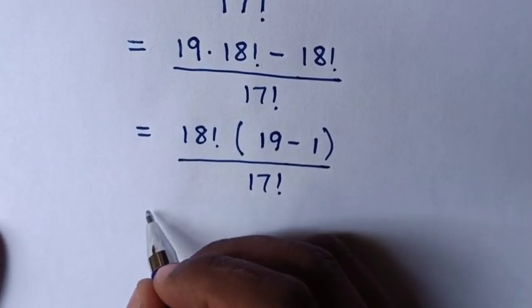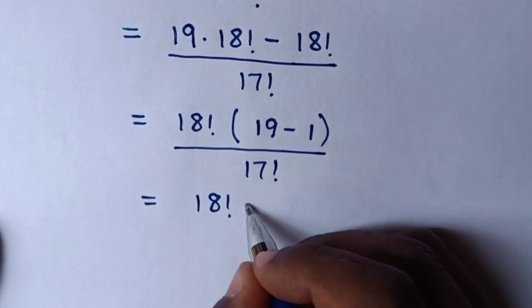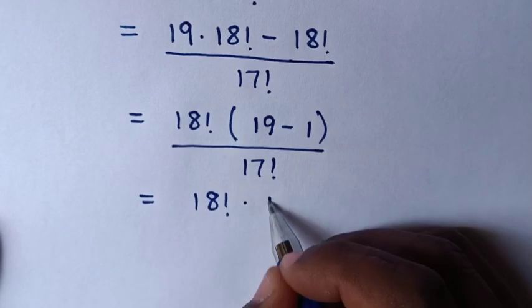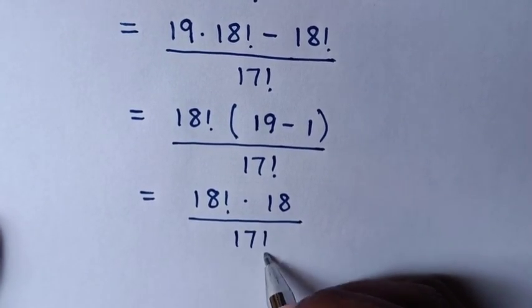Then this will be equal to 18 factorial times, this minus this is 18, then over this 17 factorial.